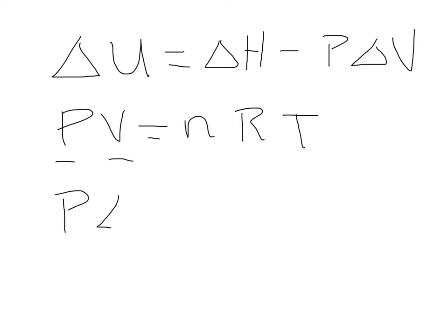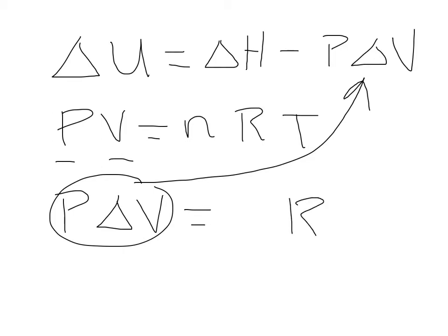So, P times delta V is equal to what? See, this P delta V is equal to this P delta V here. So, what's causing the change in the volume? Well, it can't be R because R is a constant. Will you guys shut up? I'm trying to finish the video!